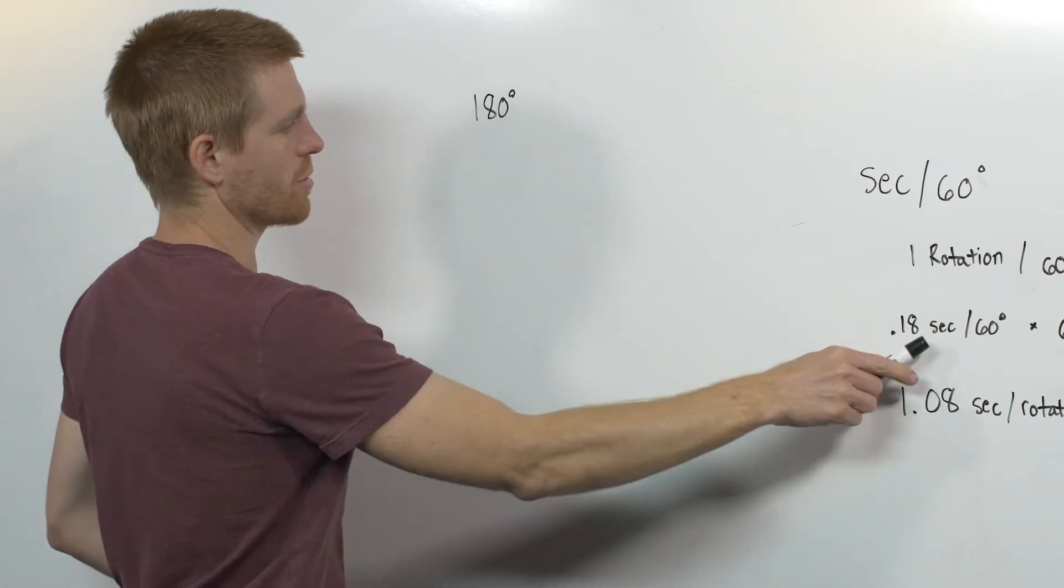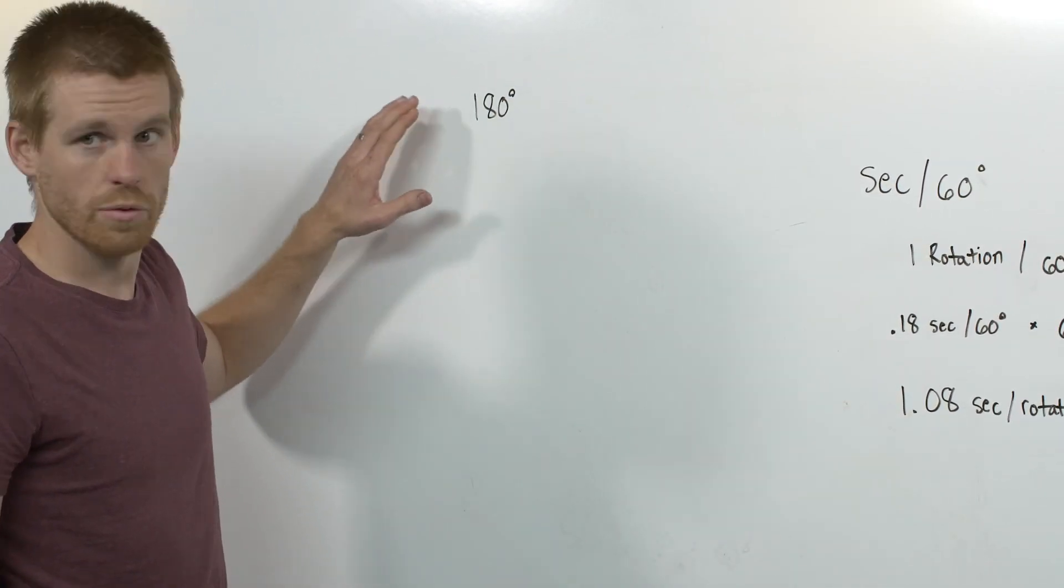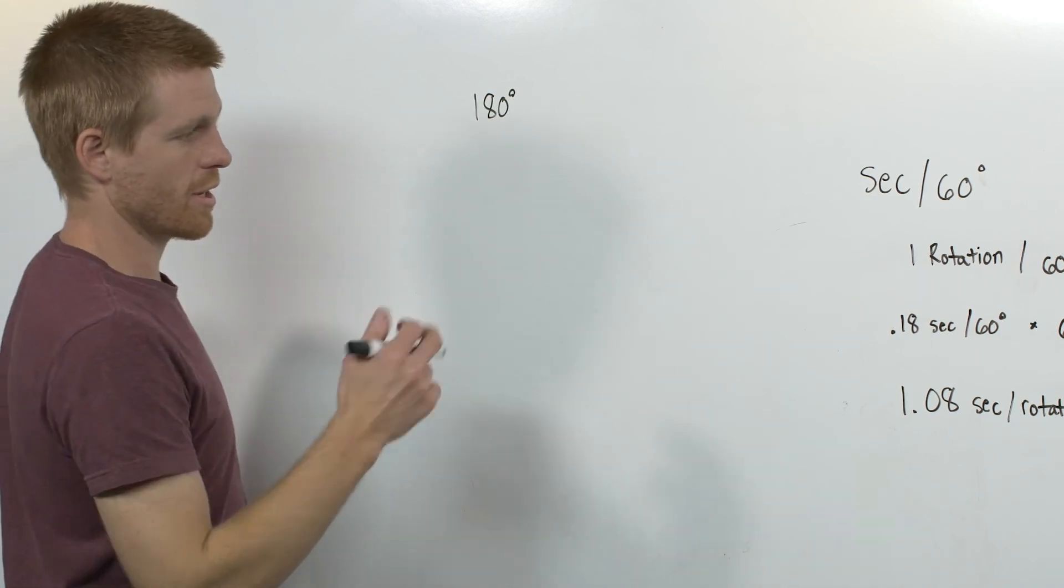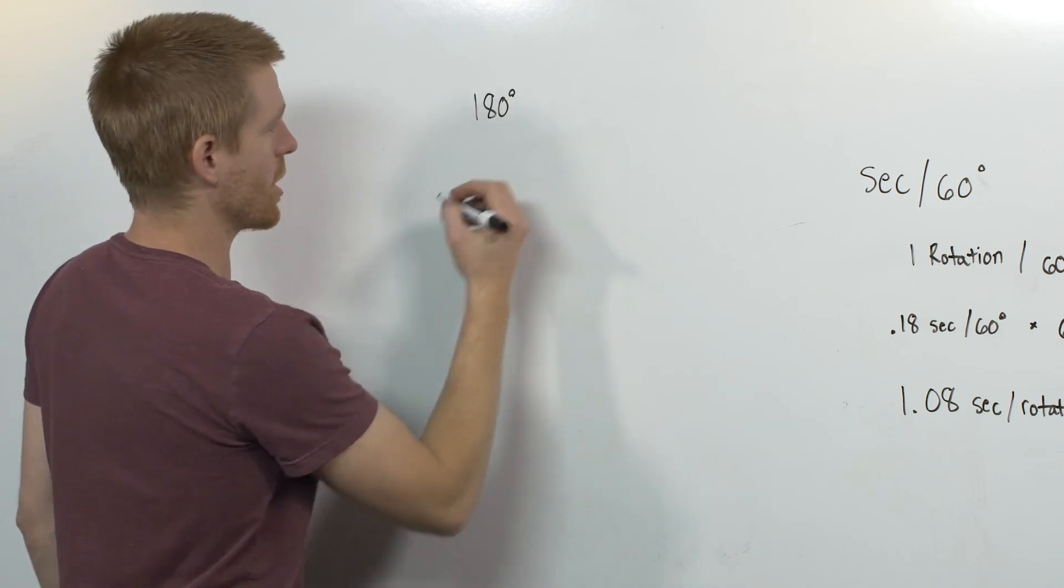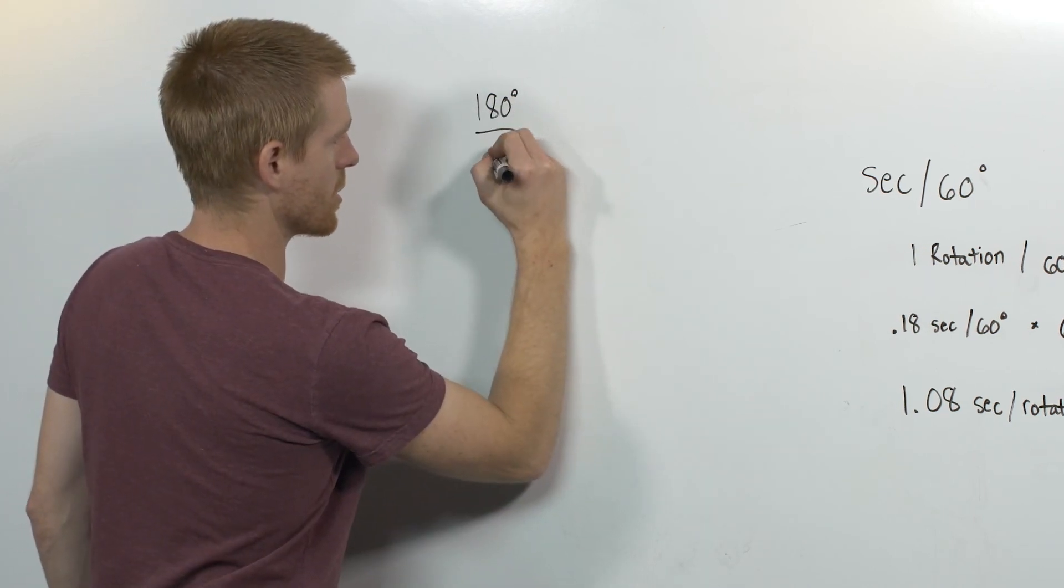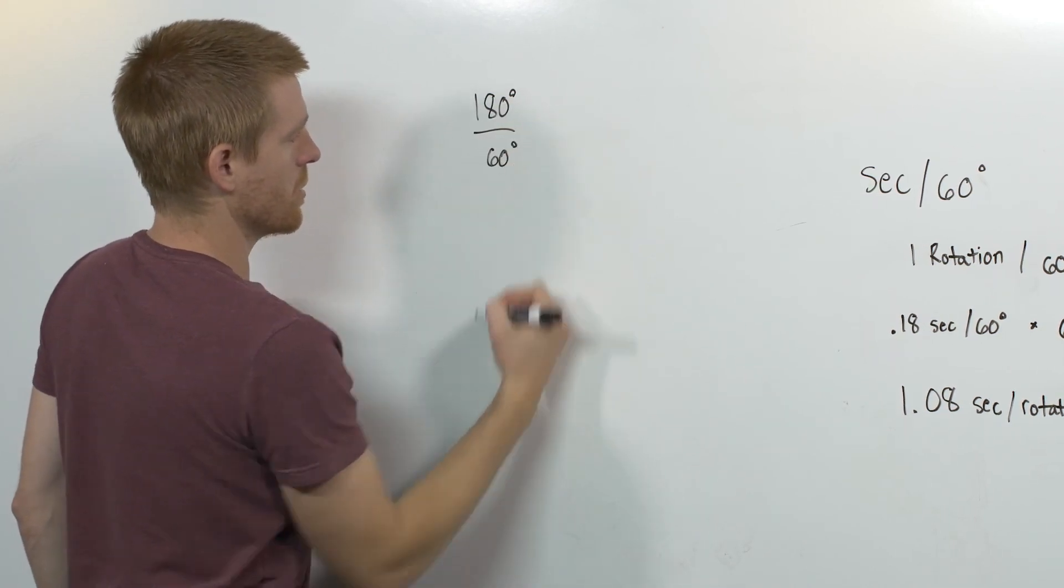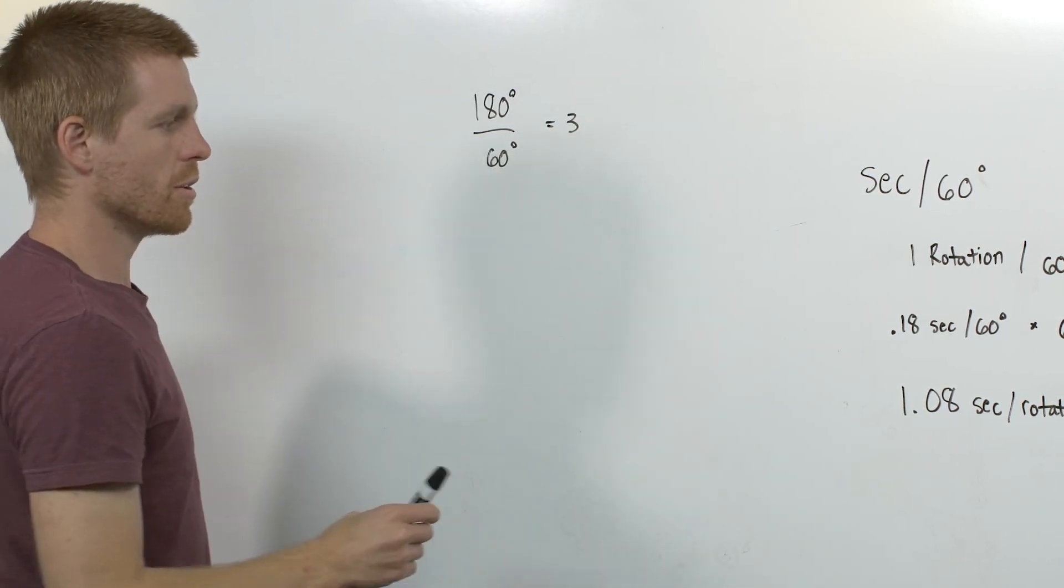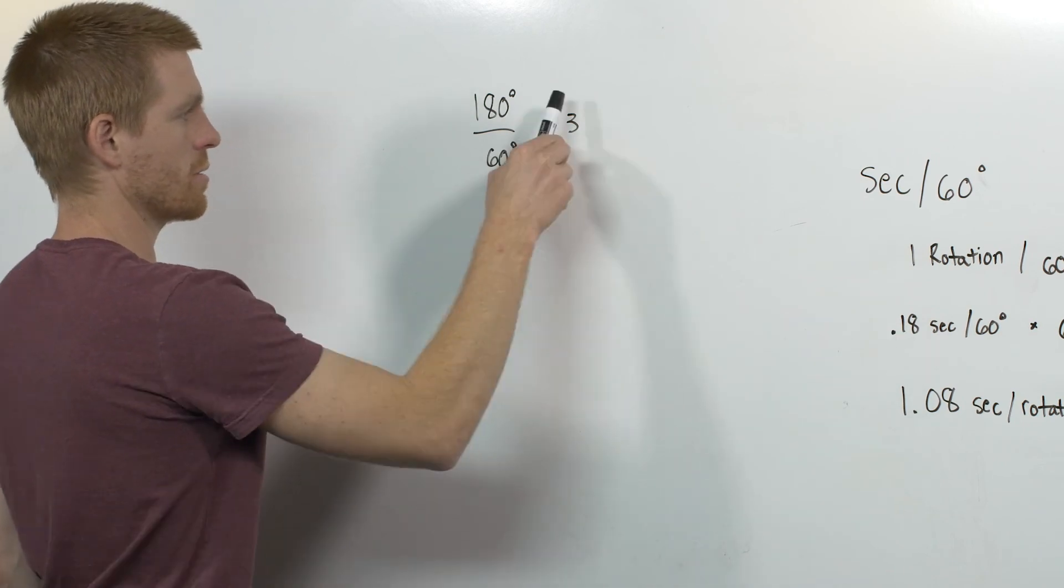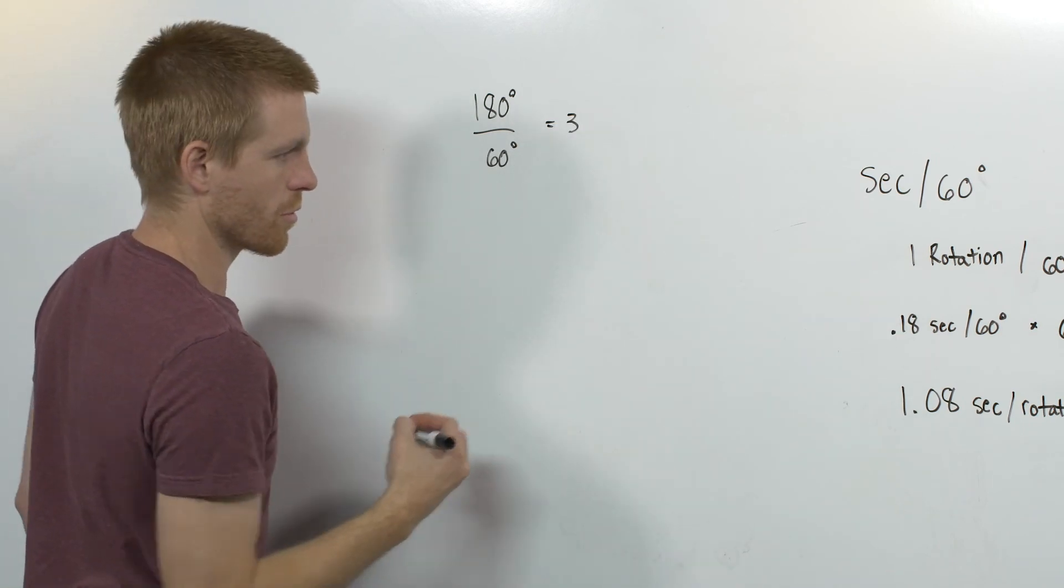So I know it travels at this speed, but I want to move this distance. All you have to do is take your amount that you want to travel and divide it by the amount that it's rated for, 60 degrees, which is equal to 3. And then you need to multiply the number of seconds by the number that you've derived.